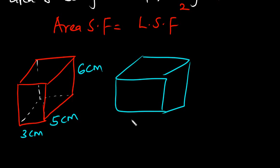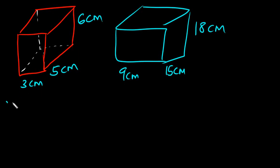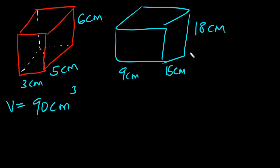We're going to have 3 × 3 = 9 cm, 5 × 3 = 15 cm, and 6 × 3 = 18 cm. Let's find the volume of each cuboid. The volume of the original cuboid is 3 × 5 × 6 = 90 cm³. The volume of the enlarged cuboid is 9 × 15 × 18 = 2,430 cm³.